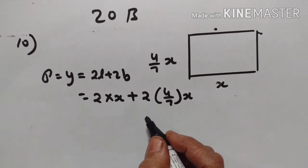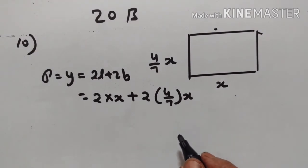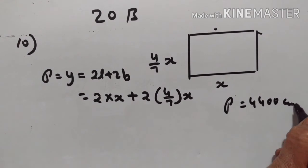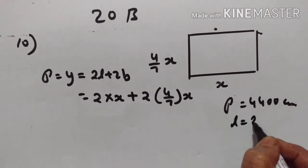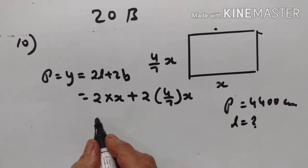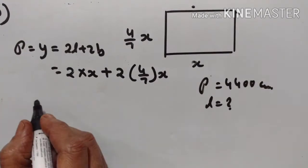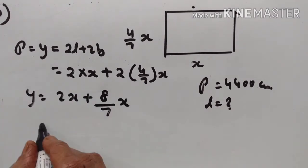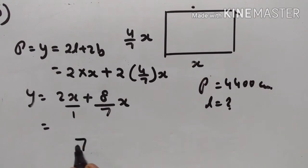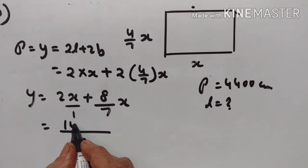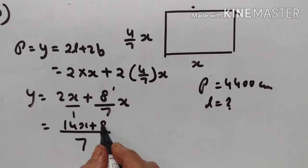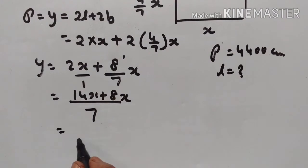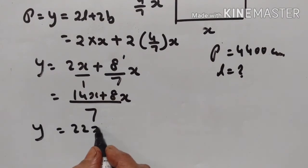Find the length of the room when the perimeter is 4400 cm. This is the equation: y is equal to 2x plus 8 upon 7 x. LCM is equal to 7. 1 times 7 is 7, so 2x gives 14x; then 8x. This gives 22x upon 7.